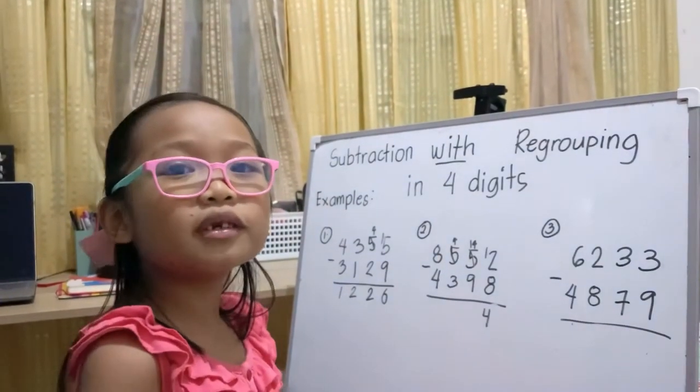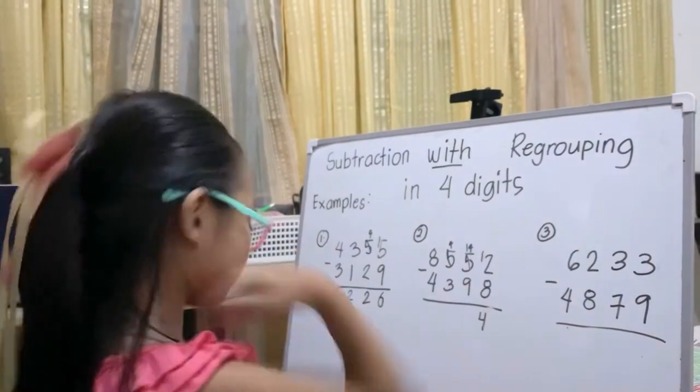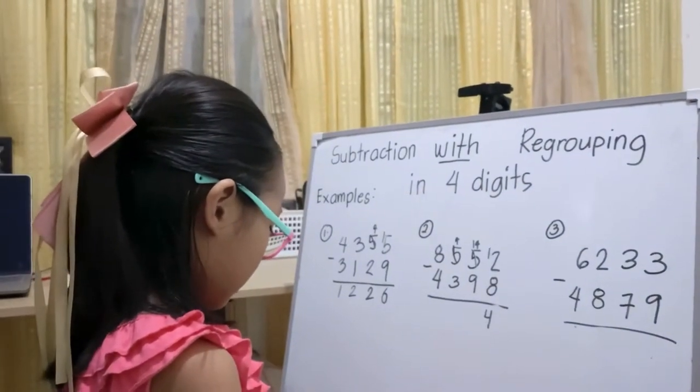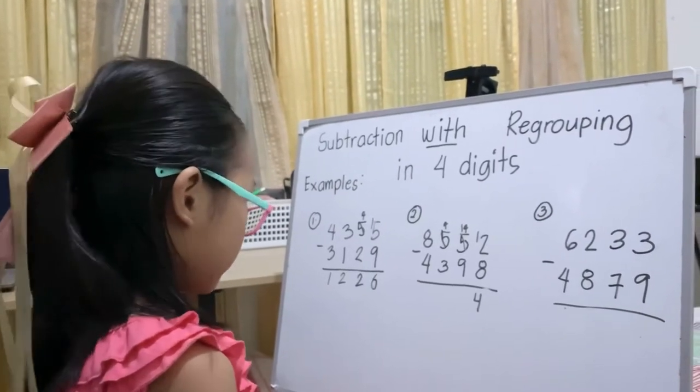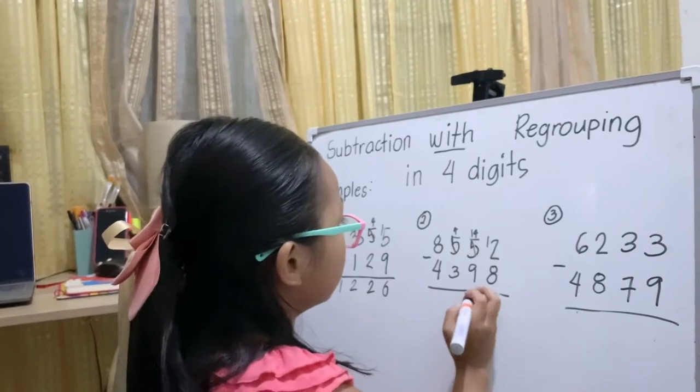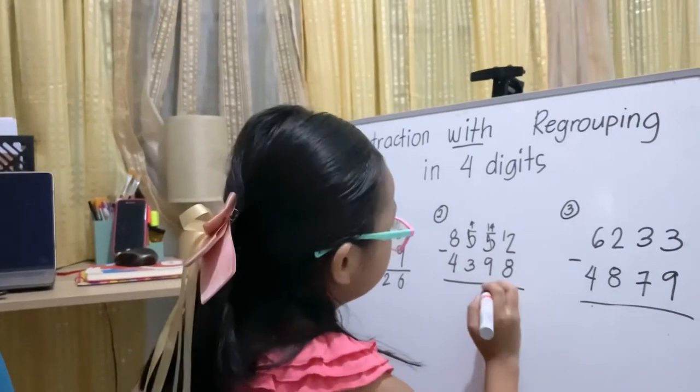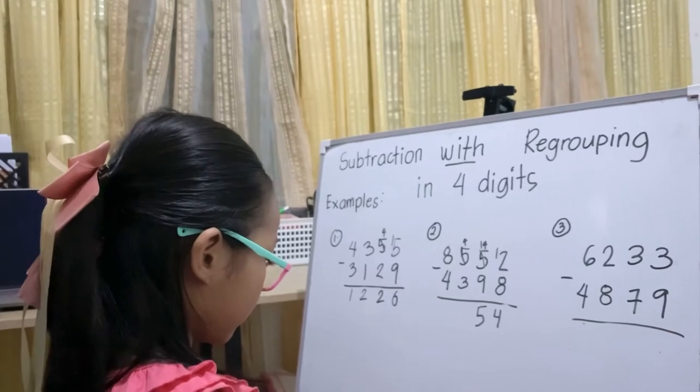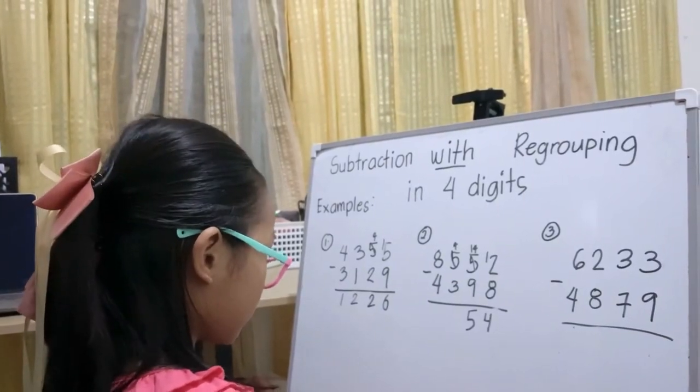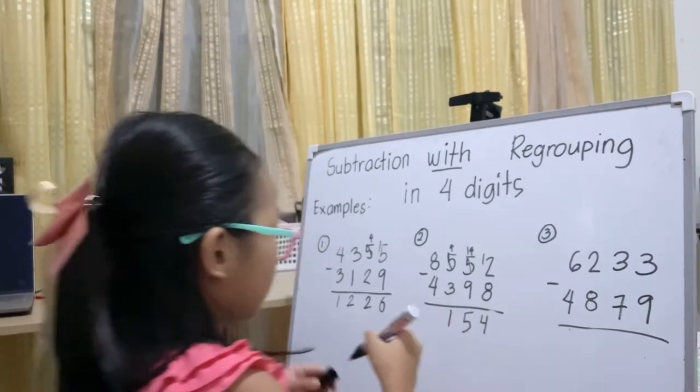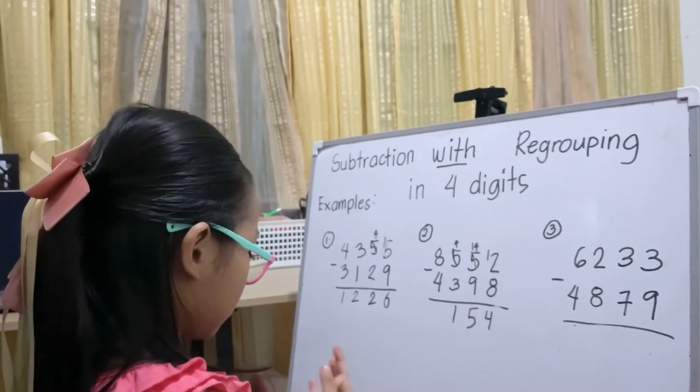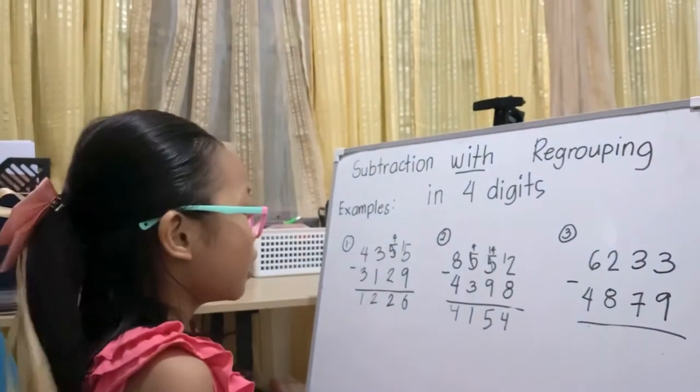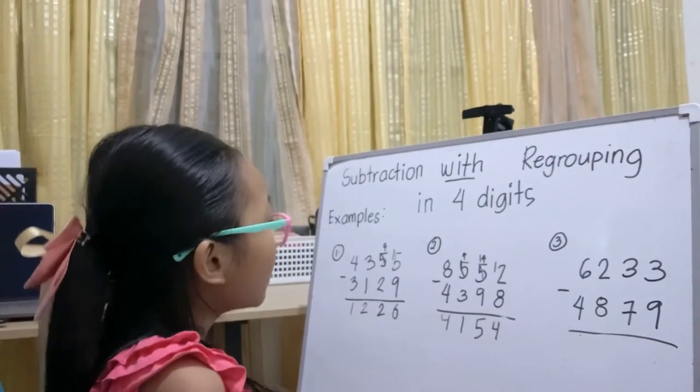Four becomes 14. Three becomes 15. One becomes 15. And the answer is 4,154.